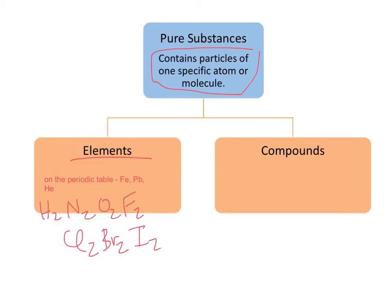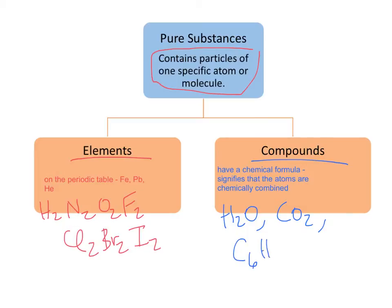So then we have compounds, and compounds have a chemical formula. And there's a very specific reason why they have a chemical formula. The chemical formula signifies that the atoms are chemically combined. So this could be something like water, or carbon dioxide, or sugar, sucrose—C6H12O6 or C12H22O11. Anything with a chemical formula is a compound, because the chemical formula signifies that the atoms are chemically combined.